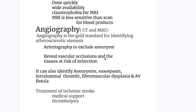Angiography excludes aneurysms, reveals vascular occlusion, and identifies tissues at risk of infarction. It can also identify vasospasm, intraluminal thrombi, fibromuscular dysplasia, and AV fistula.